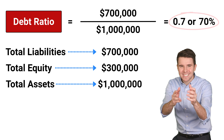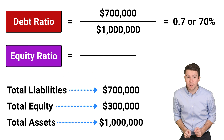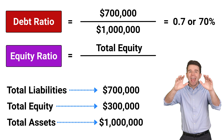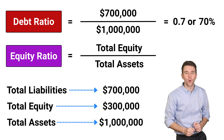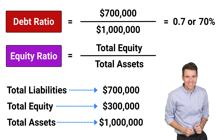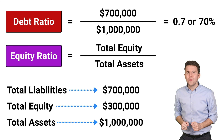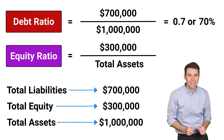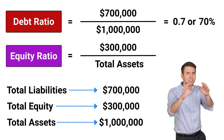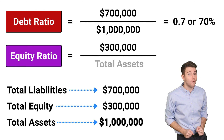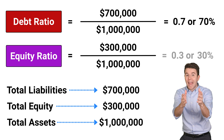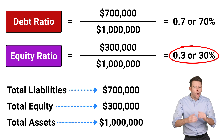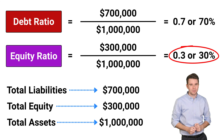The Equity Ratio is calculated by taking total equity and dividing it by total assets. Using our example, we take total equity of $300,000 and divide by total assets of $1,000,000 to get an Equity Ratio of 0.3 or 30%.